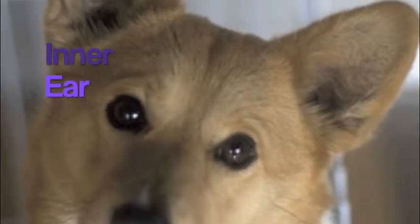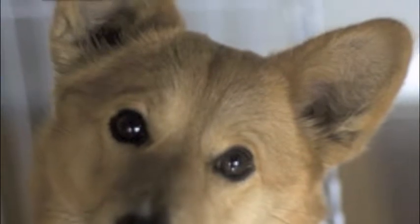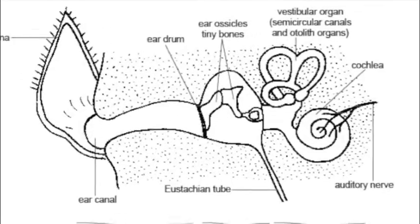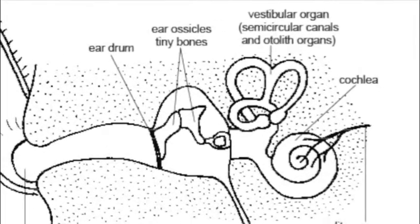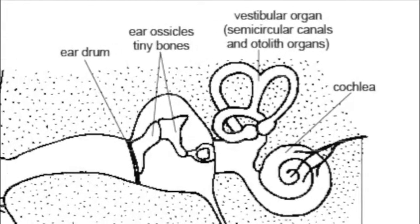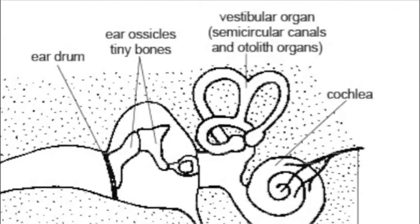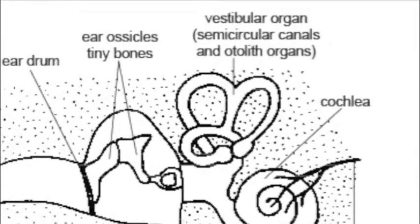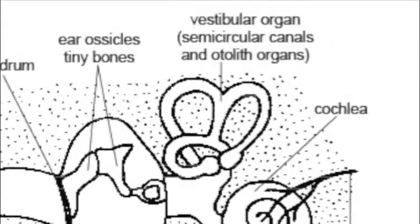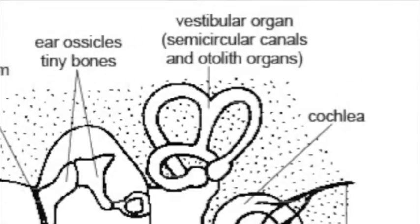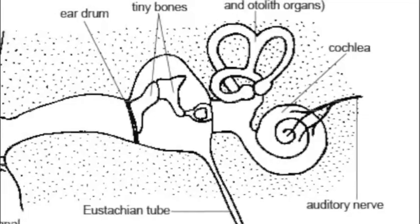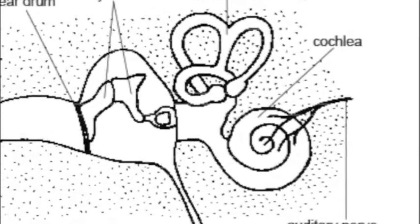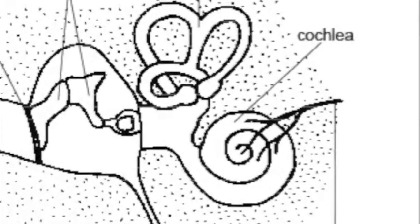The inner ear consists of the vestibule, which contains receptors for balance and position, the semicircular canals, which contain sensory cells that detect changes in position, and the cochlea, which sends signals of sound to the brain.